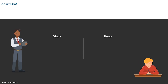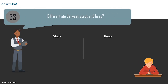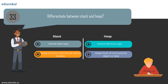Question 33: difference between a stack and a heap. Stack is used for static memory allocation and heap for dynamic memory allocation; both are stored in RAM. Variables allocated on the heap have their memory allocated at runtime and accessing this memory is a bit slower, but heap size is only limited by the size of virtual memory.